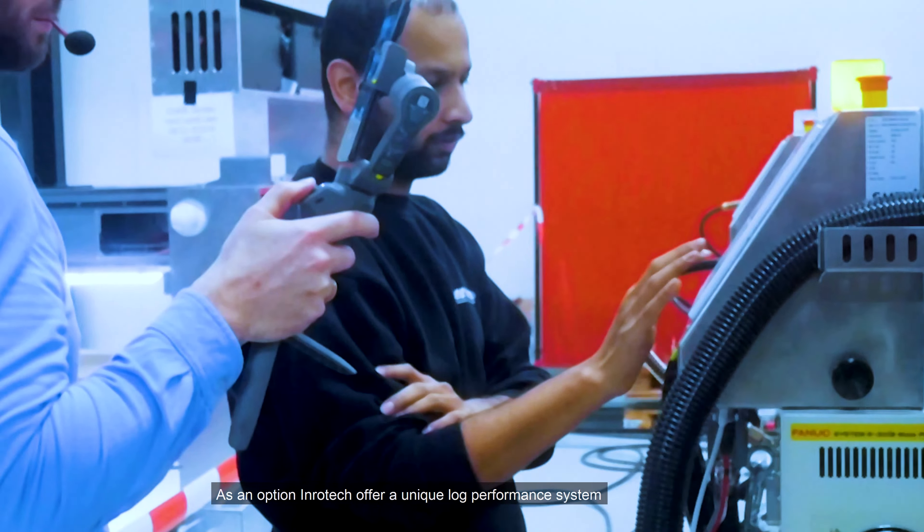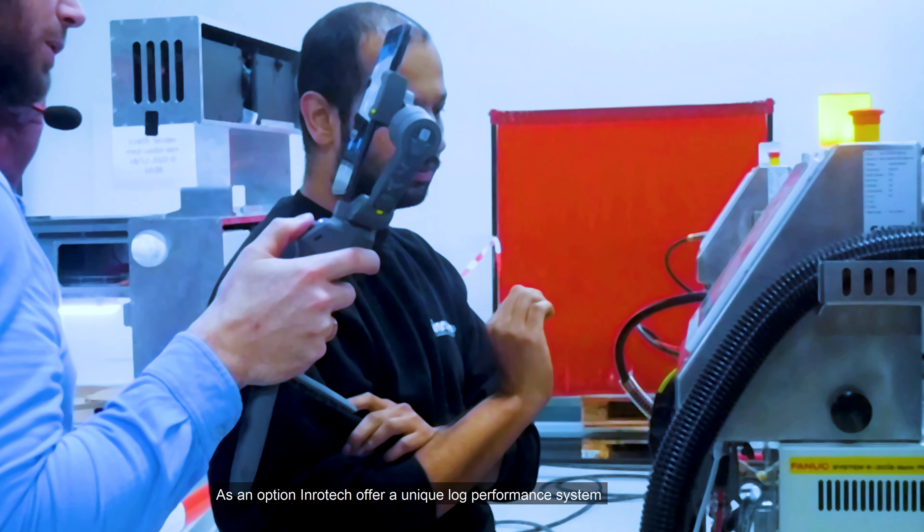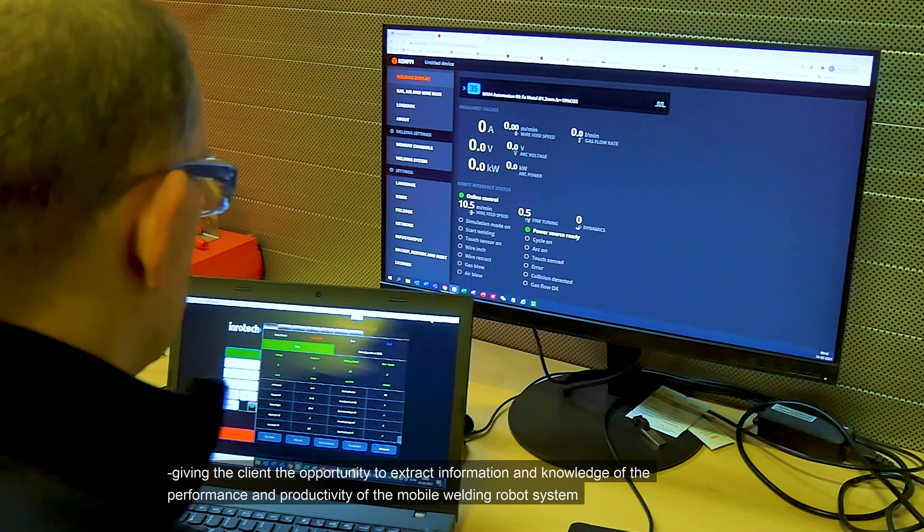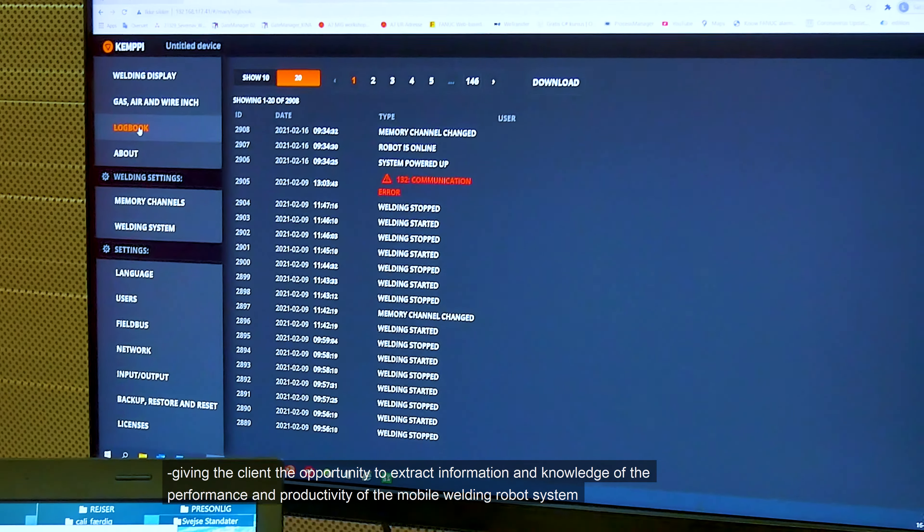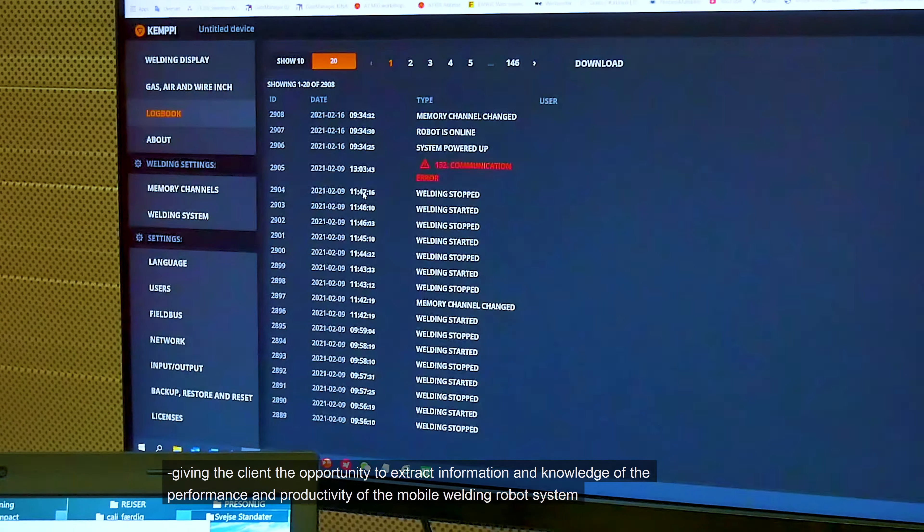As an option, Inrotec offers a unique log performance system, giving the client the opportunity to extract information and knowledge of the performance and productivity of the mobile welding robot system throughout the lifetime of the welding robot.